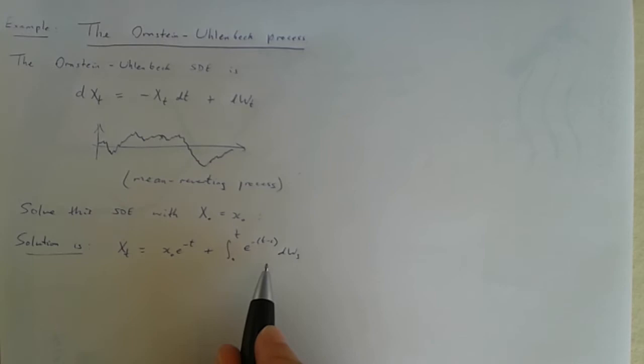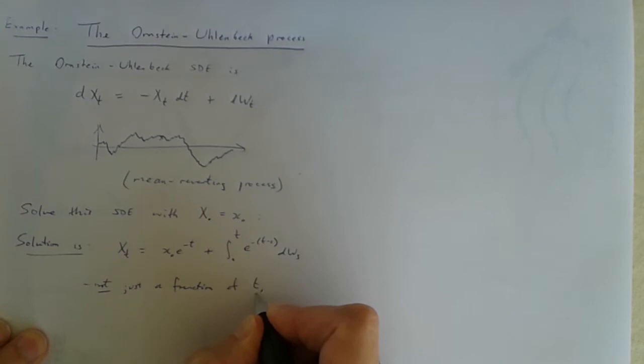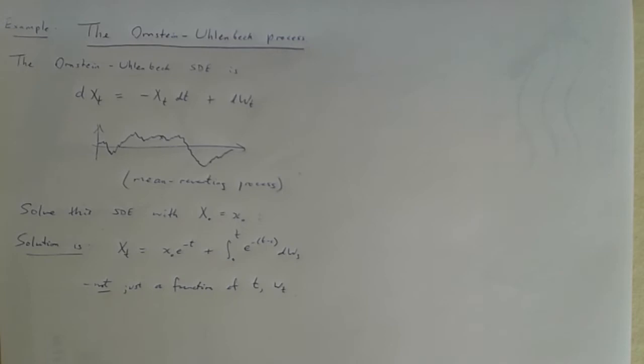Because it's an integral it involves other values of w as well. In fact it involves all of the values that the w process has from 0 to t. So it's not just a function of t and wt. So Ito's lemma does not directly apply.